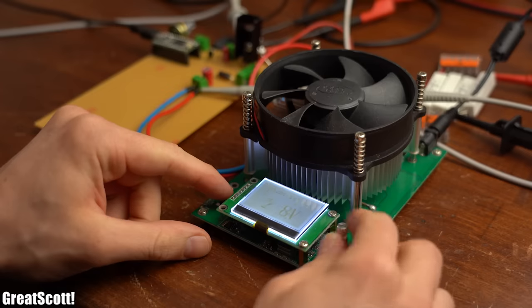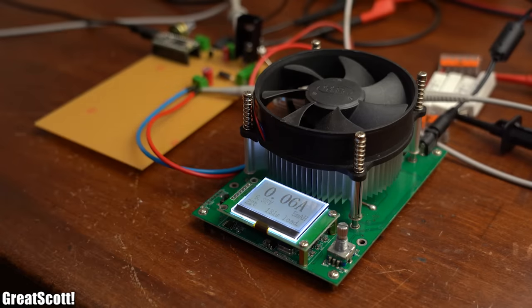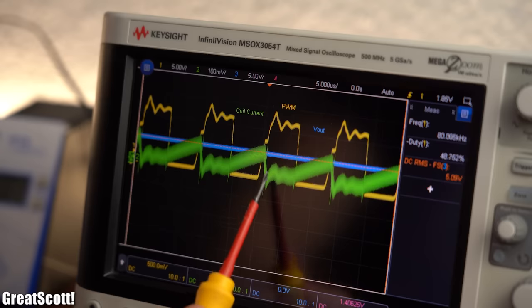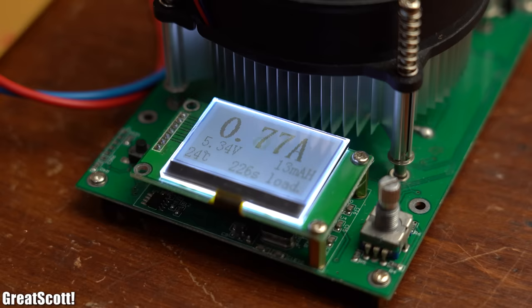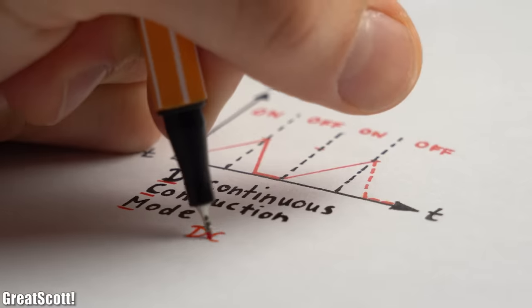Before we saw that with this inductor, while drawing only a little bit of power, the current fell to zero during the second switching state, which only changed when we drew more current on the output.